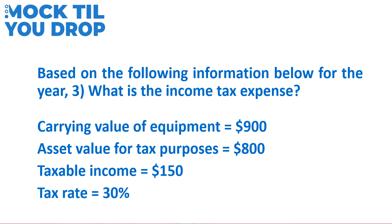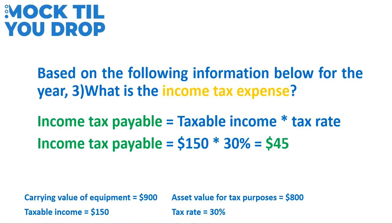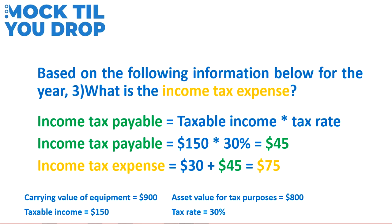The income taxes payable is what the company owes to its tax authority. Multiplying taxable income of $150 by the tax rate of 30% gives us $45. Because we had a deferred tax liability of $30, we add that to taxes payable of $45 to get $75, which is our income tax expense. If we had instead had a deferred tax asset of $30, we would reduce taxes payable by that amount to get $15 in income tax expense.